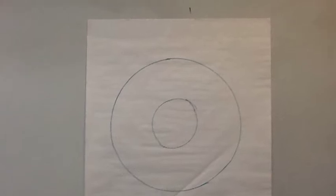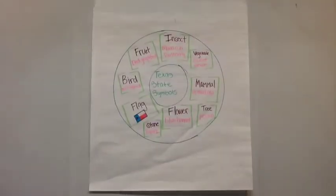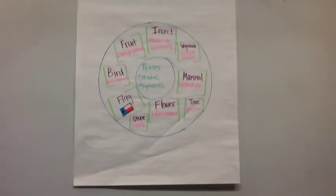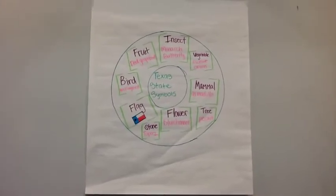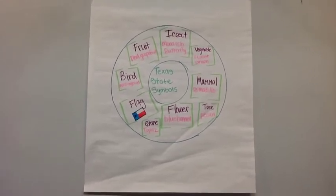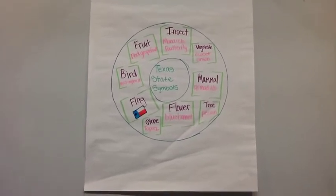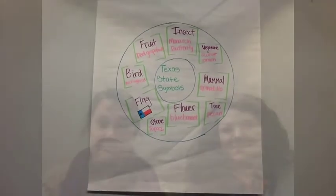Here is our blank circle map. This is our completed circle map. On the inner circle it says Texas State Symbols, which is our title. The outer circle has all the symbols that relate to the state of Texas. The circle map is a way to visually organize all our information about Texas State Symbols. Now we're going to use our completed circle map for activities in the classroom. Thanks for learning about Texas State Symbols with us.